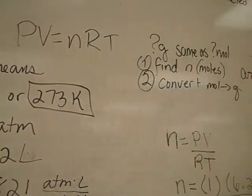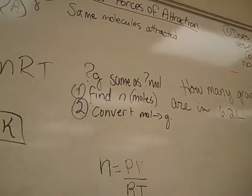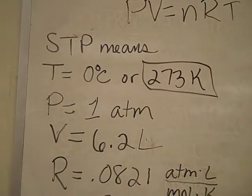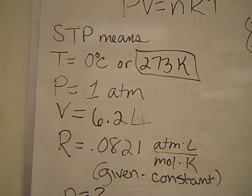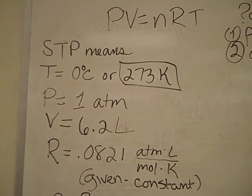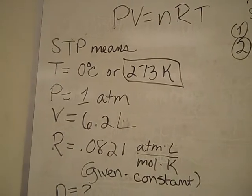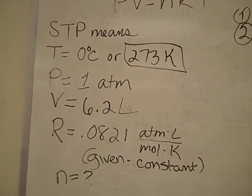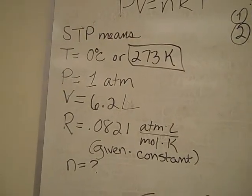We're told in the problem that our container holds 6.2 liters, and our gas will fill that container. We always know R because it's a given constant. It's always 0.0821 when you have your pressure in atmospheres, your volume in liters, you're working with moles, and your temperatures in Kelvin. Since we were asked for grams, we're first going to find our number of moles.